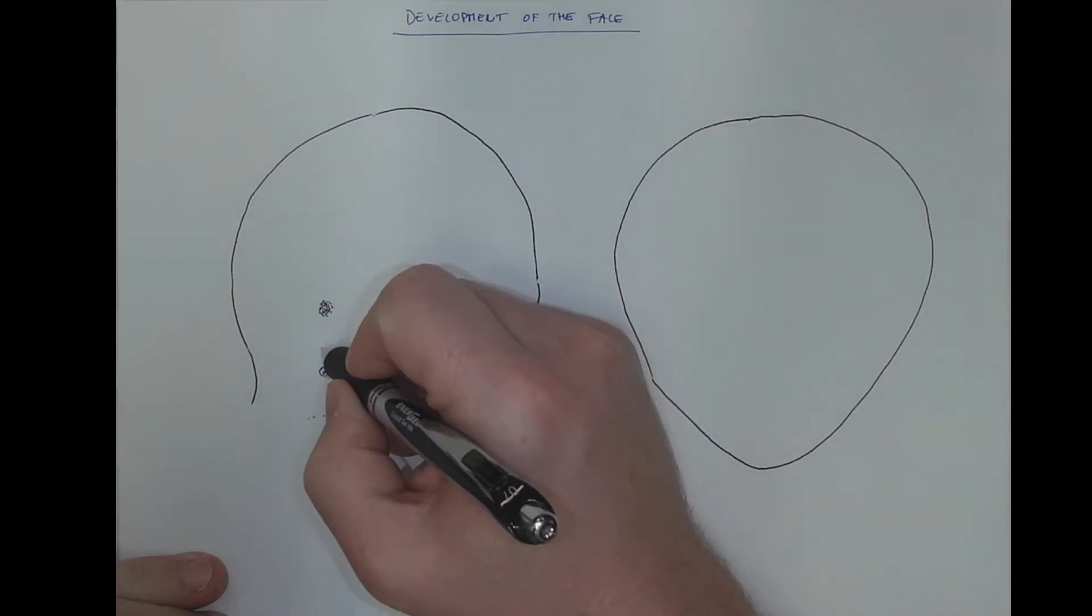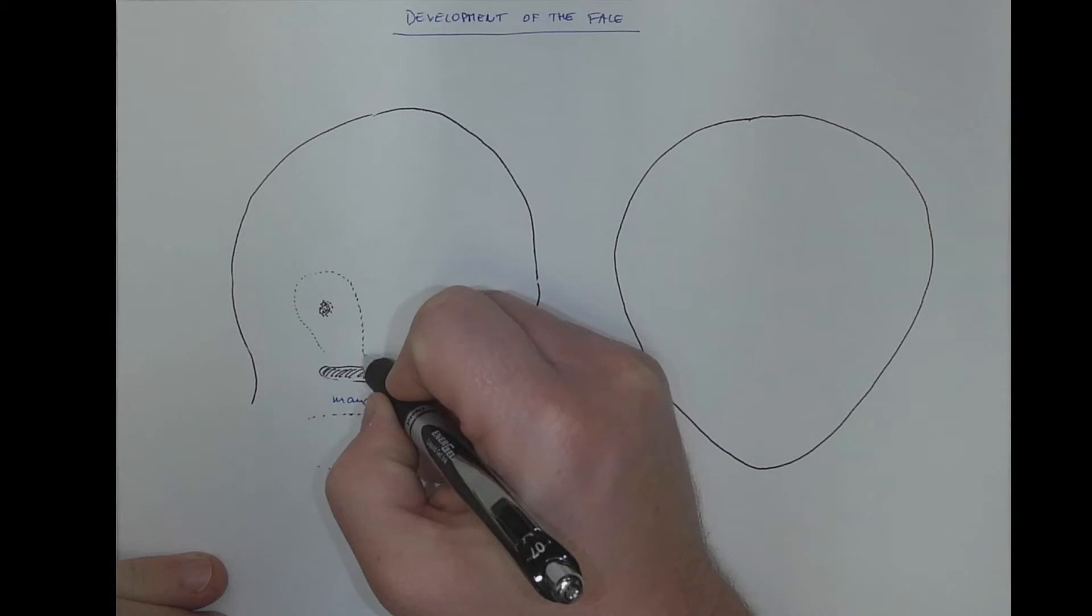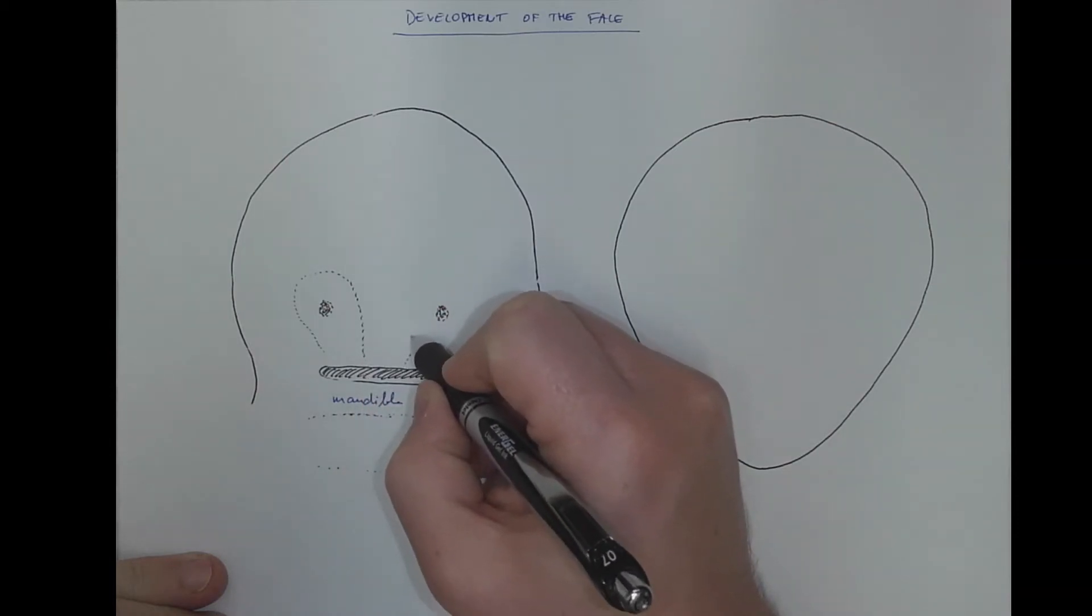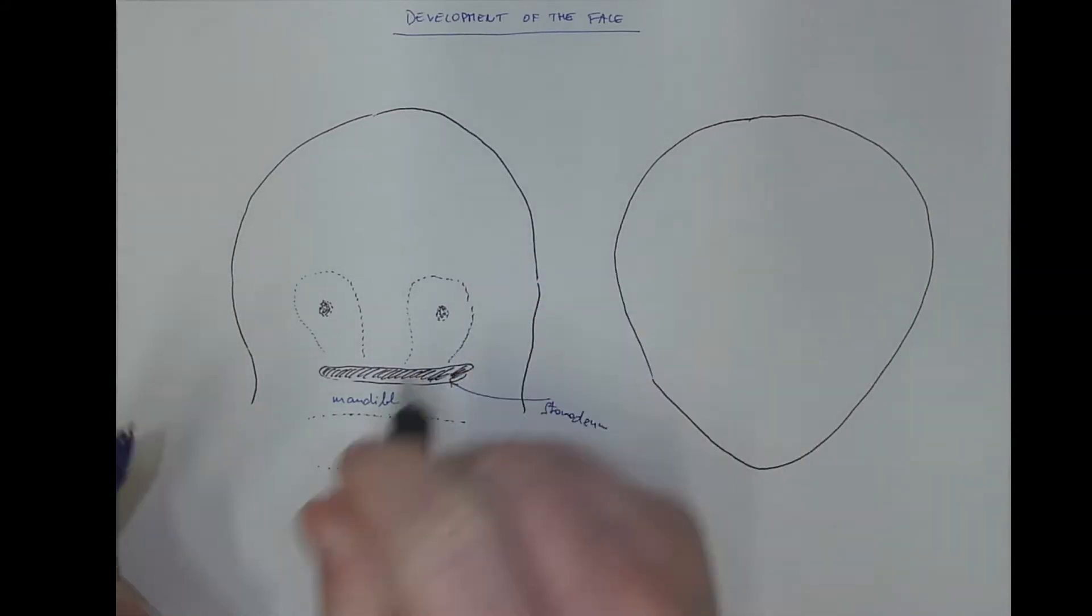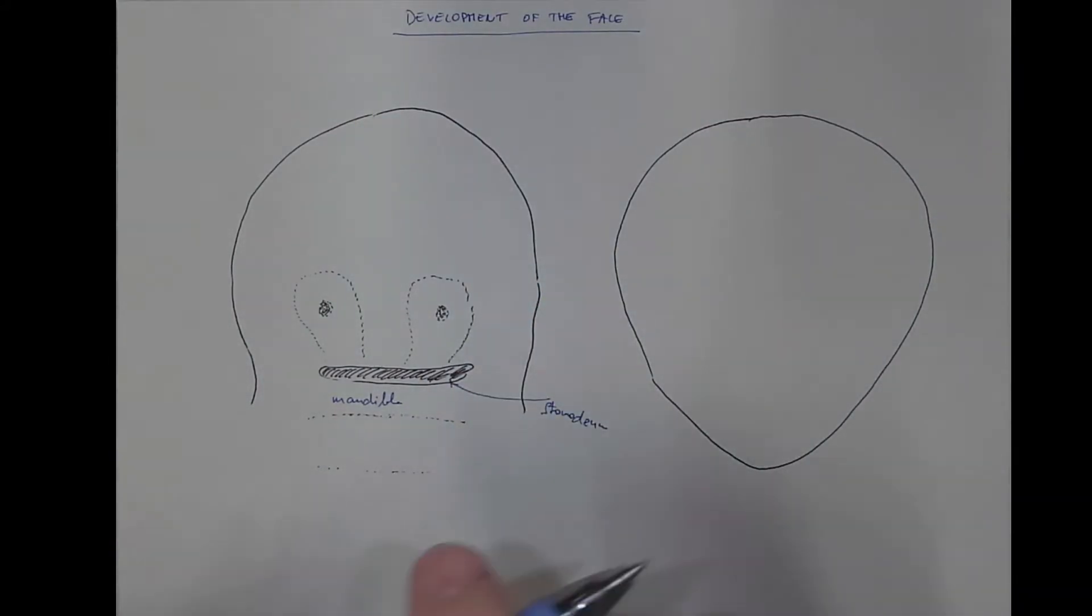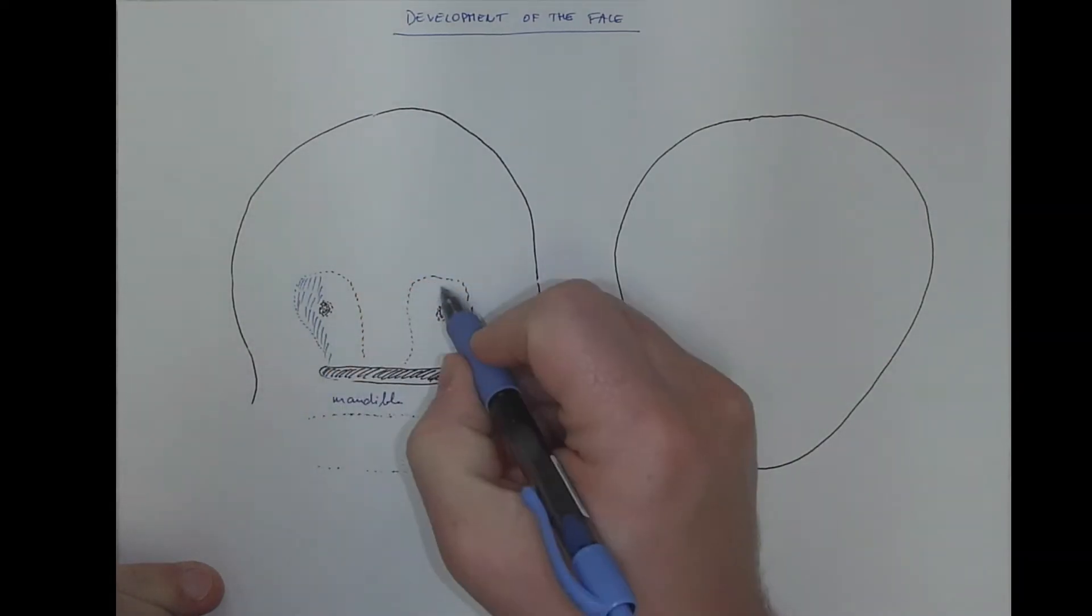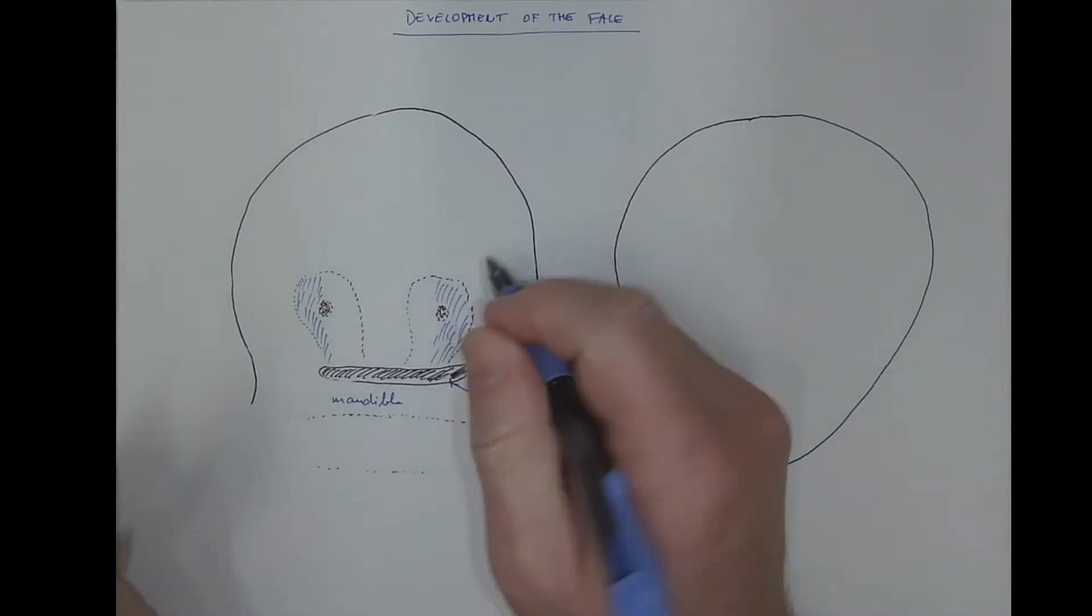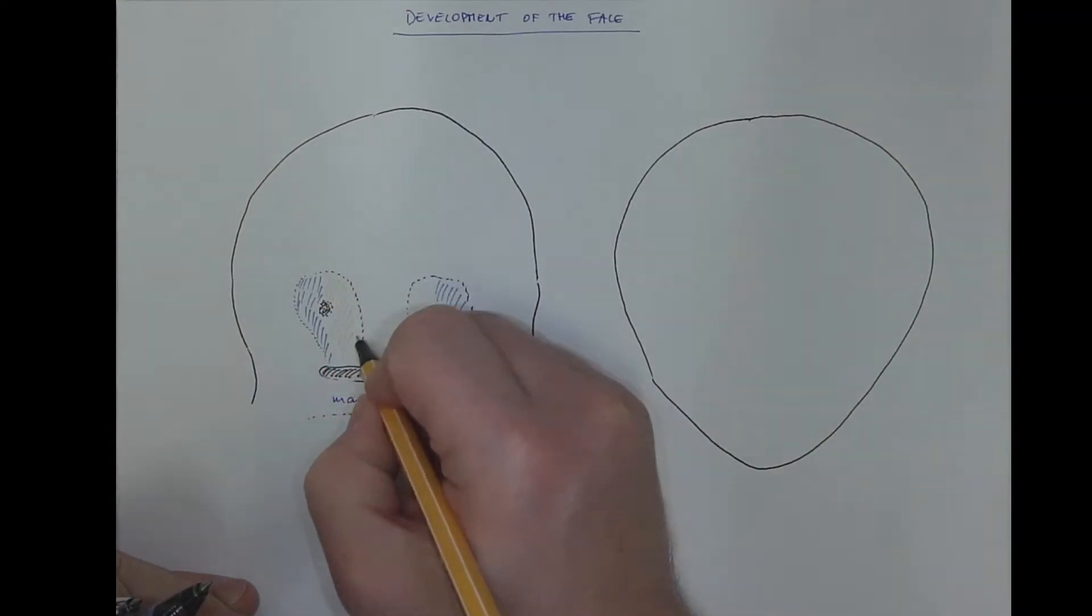So there is some nasal prominence around it. I will use different color for the lateral part of the nasal prominence because the fate would be different. So this is the lateral nasal prominence and the medial part of the nasal prominence.